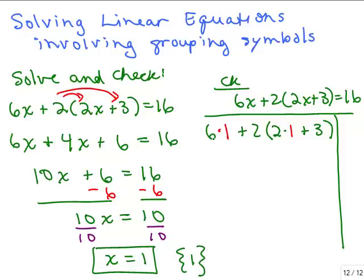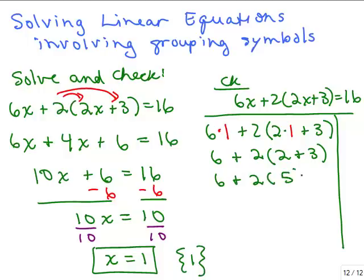I could go ahead and do 6 times 1 now or later, but I still have to simplify inside parentheses first. 2 times 1 is 2, plus 3. We do not add the 6 plus 2 — we do inside parentheses first, then multiplication. 2 next to the 5 is multiply, so that's 6 plus 10, and I get 16. On the right side, it was already 16, so it does check out. So 1 is the solution to this problem.